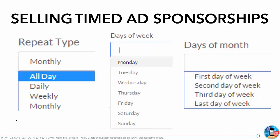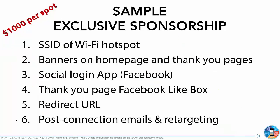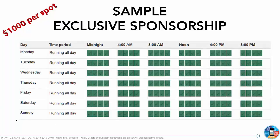Not only do you have time of day and day of week, you also have various placements across the board. You can use it on the home page, landing page, and thank you page. You can manage the SSID itself, put banners on the home and thank you pages, sell the ability to use that person's app on Facebook, Google, or Twitter. You can add a Facebook like box, redirect URL, TripAdvisor, post-connection emails, and retargeting. Then you break out your times into segments by day and hour, and sell them like a calendar — little boxes showing which advertiser bought which slot.